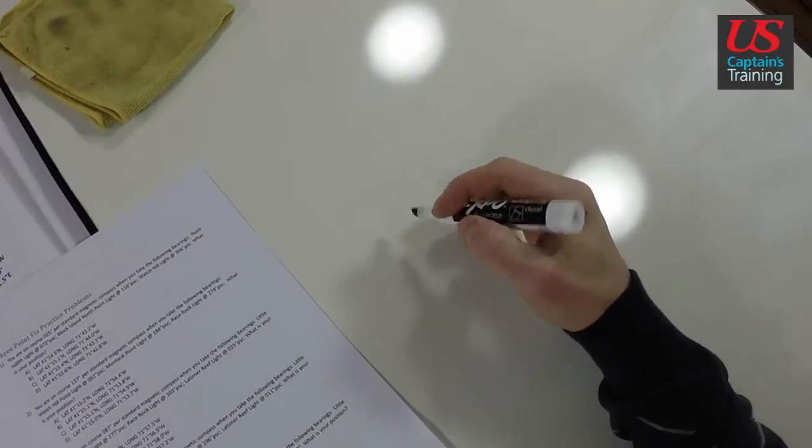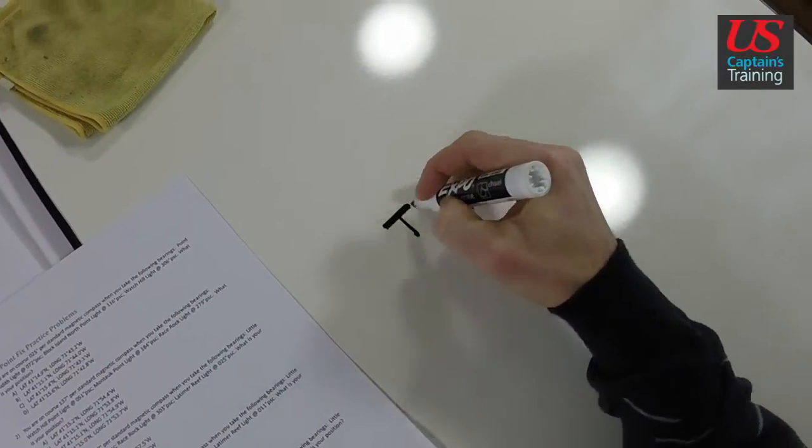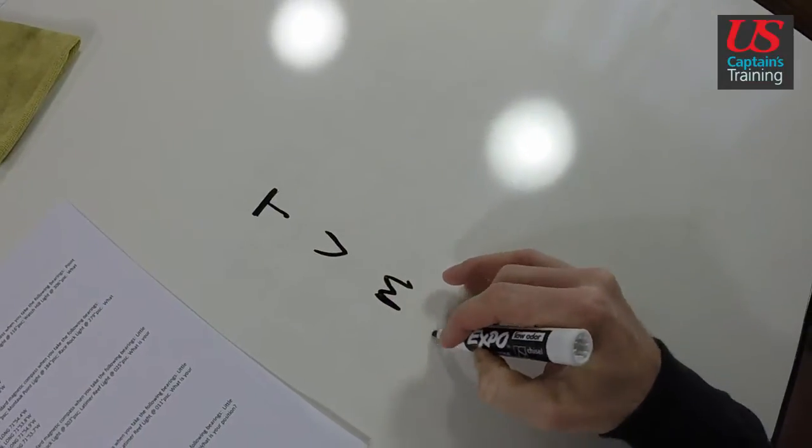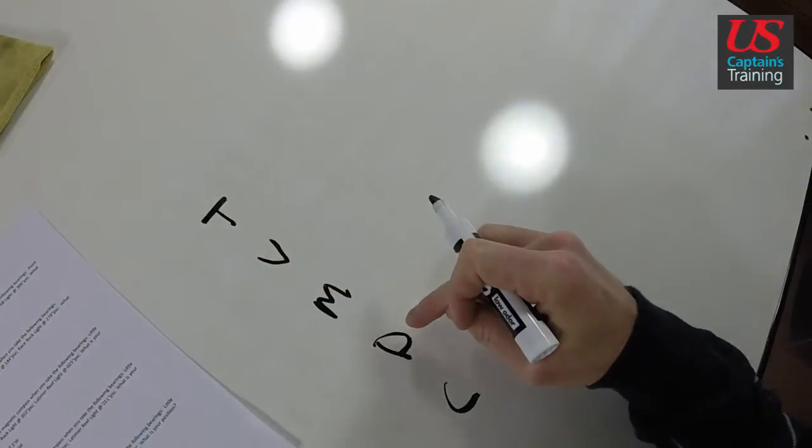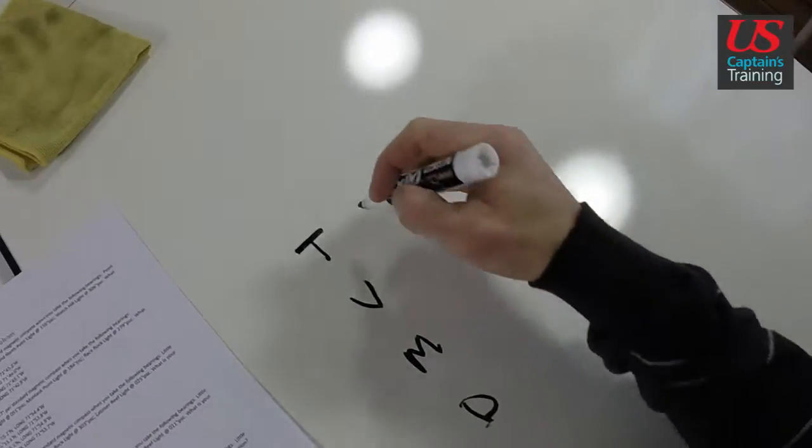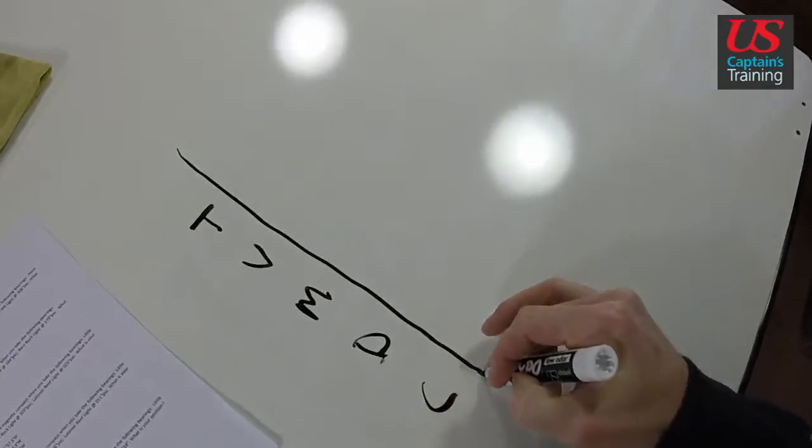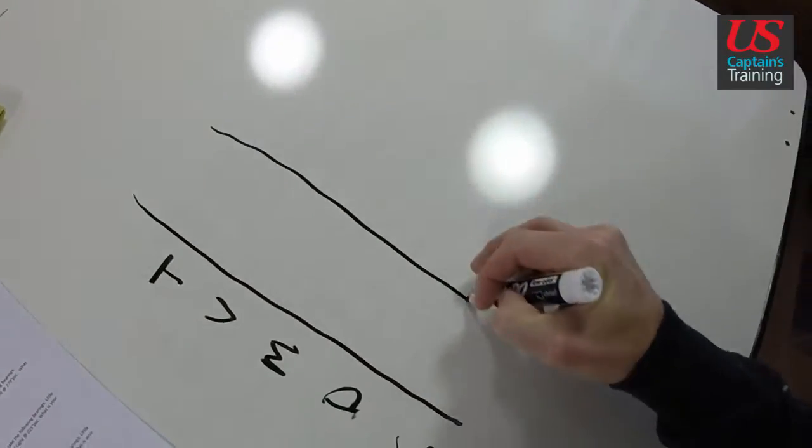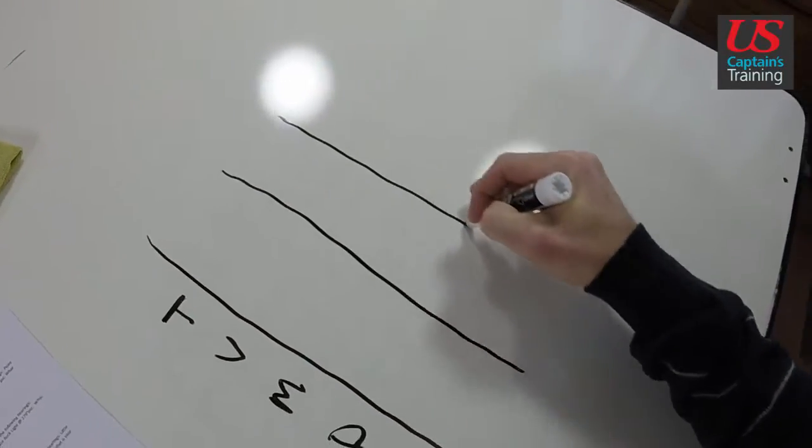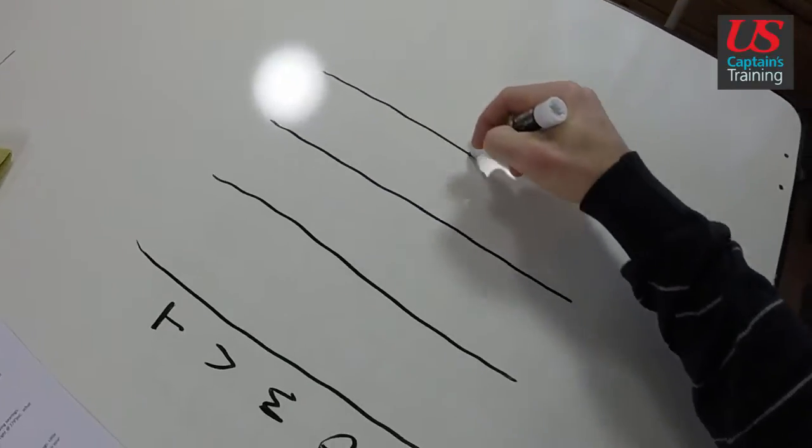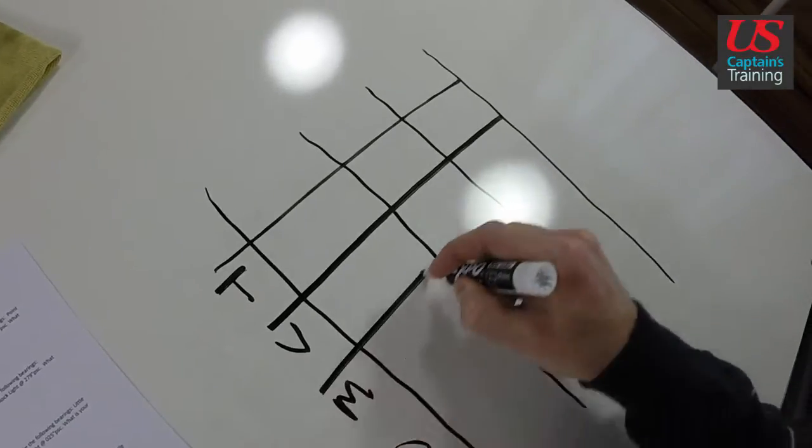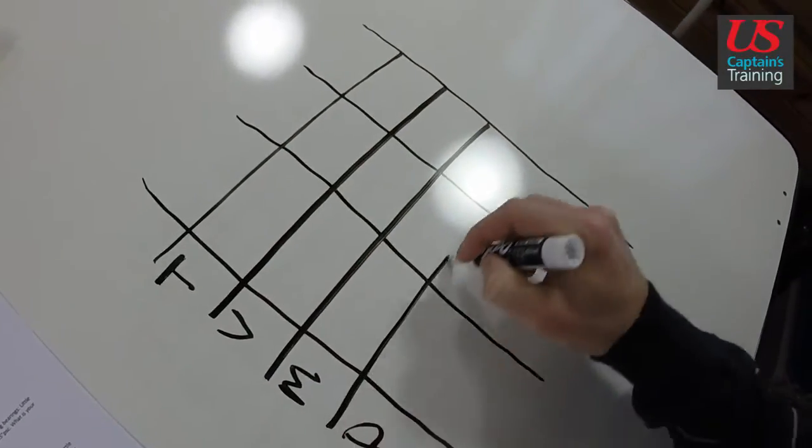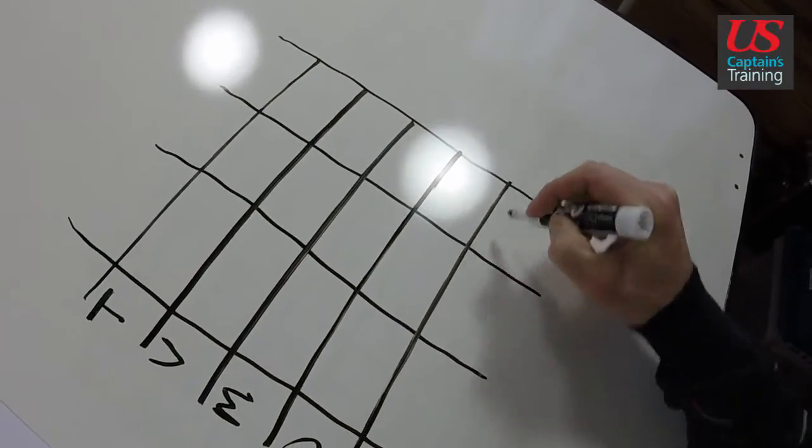We do a TVMDC - True, Variation, Magnetic, Deviation, Compass. We make a grid out of it. It's just a good way to keep them organized. Okay, we'll label the bearings up top and put the correct information in here.